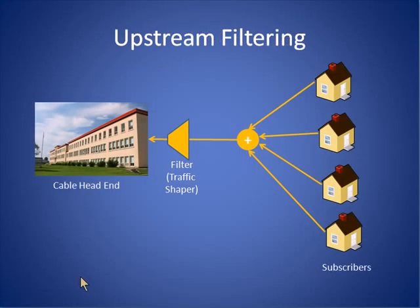We said that information is much easier to send in the downstream direction in a cable system than in the upstream direction. The third function provided by our CMTS is a filter or traffic shaper. This inherently limits the amount of bandwidth available to each customer in the system so that no one customer takes more than their fair share of the upstream bandwidth, which is a precious commodity in a cable system. We'll have more to say about this upstream filtering when we discuss DOCSIS 3.0 in a separate tutorial.